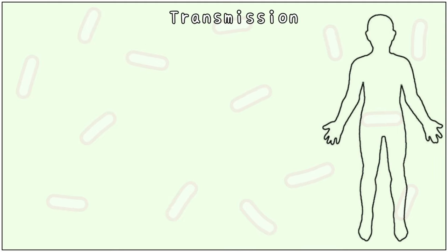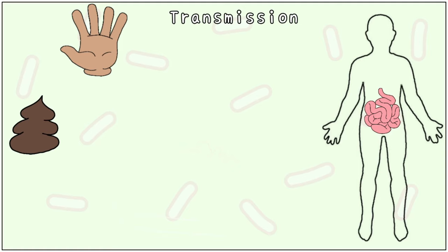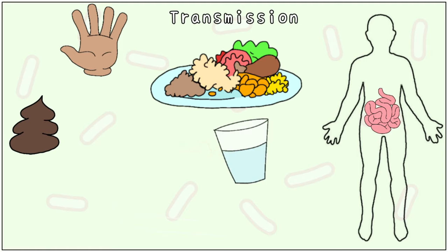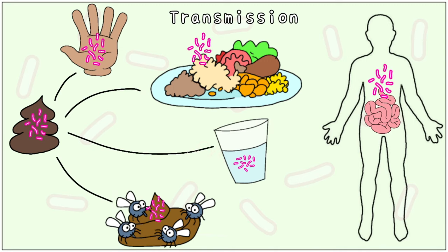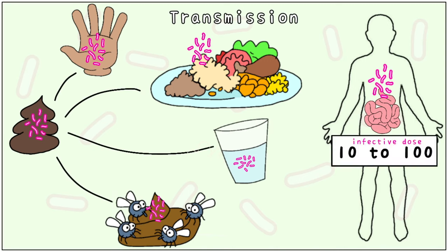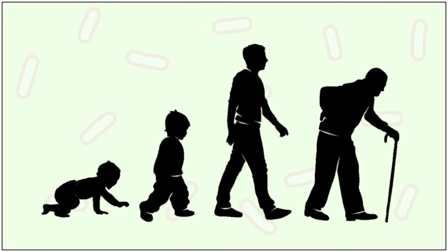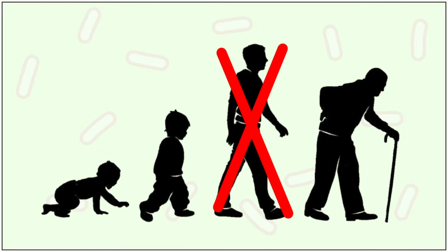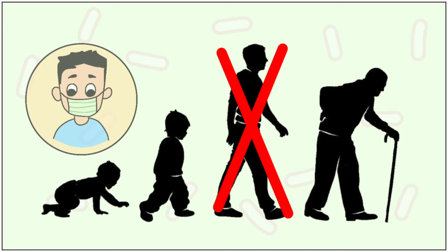Shigella only infects humans and primates. It is primarily a parasite of the intestine. It is transmitted by the faeco-oral route from the faeces of an infected person through unclean hands, food, water, and flies. It takes only 10 to 100 bacilli to cause the disease, meaning it has a very low infective dose. Shigella primarily infects children and the elderly, along with those having compromised immunity.